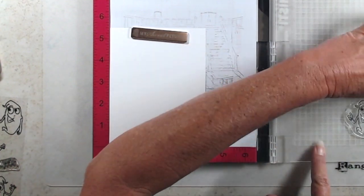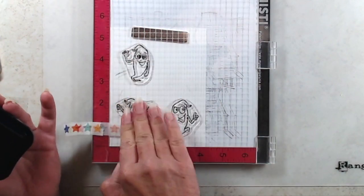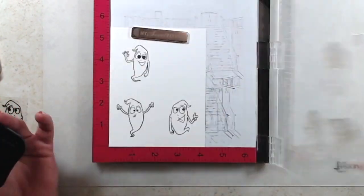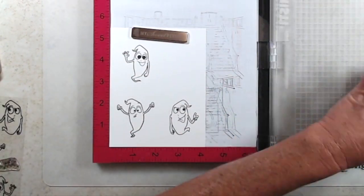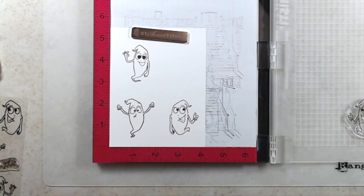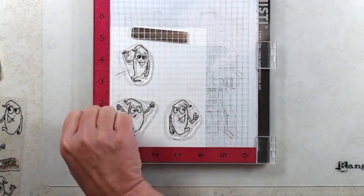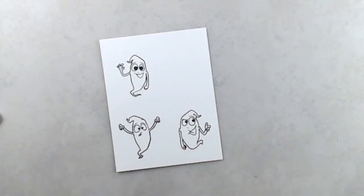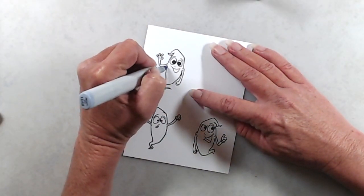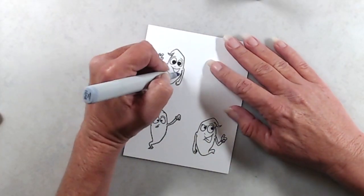To get started, I stamped the ghosts onto a piece of super smooth cardstock with Tuxedo Black ink so that I could do a little bit of Copic coloring, and the coloring is really very simple. I started out with BV31 and just outlined the ghosts.